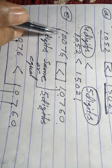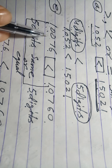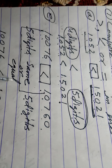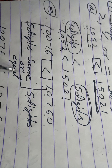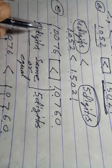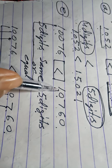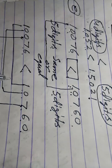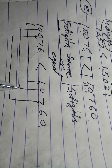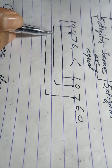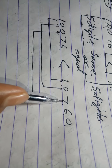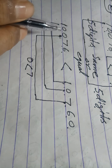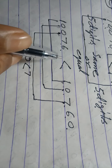Next: 10076. It has 5 digits. Both numbers are the same digit count, so we start from the left. 1=1, 0=0, the 3rd digit: 0 versus 7. 0 is smaller than 7. So 10076 is smaller than 10760.